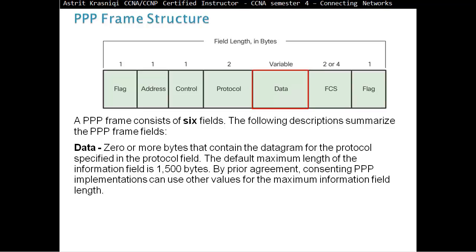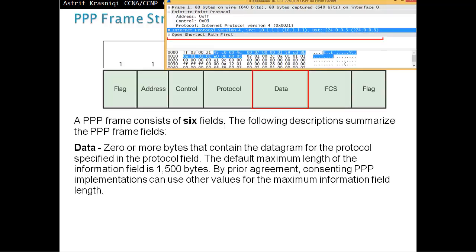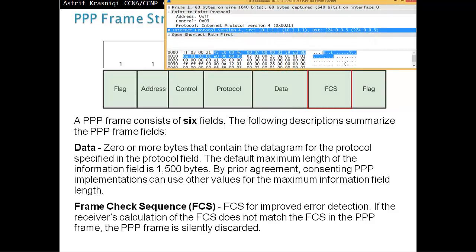Data. Zero or more bytes that contains the datagram for the protocol specified in the protocol field. The default maximum length of the information field is 1500 bytes. By prior agreement, consistent PPP implementation can be used other values for the maximum information field length.